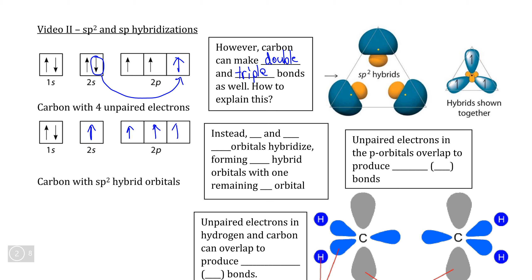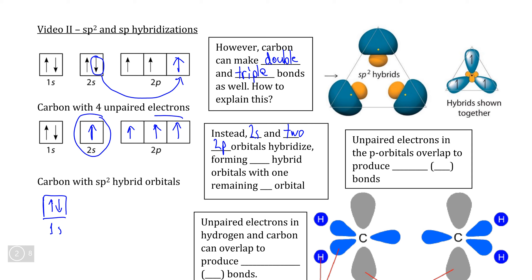So here we can see, just as before, carbon has four unpaired electrons, but when we make double bonds, we're going to take the orbital from the 2s subshell and only two of the 2p orbitals and hybridize them together. The 1s subshell contains the core electrons, so no hybridization occurs there. When we make our hybrid orbitals, we join the 2s subshell with two of the 2p orbitals.